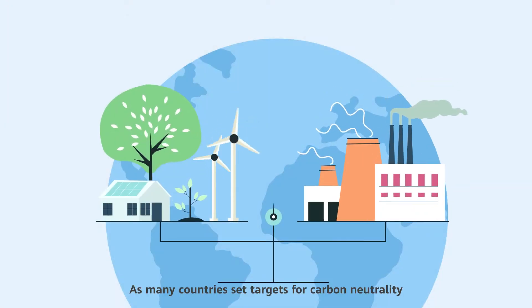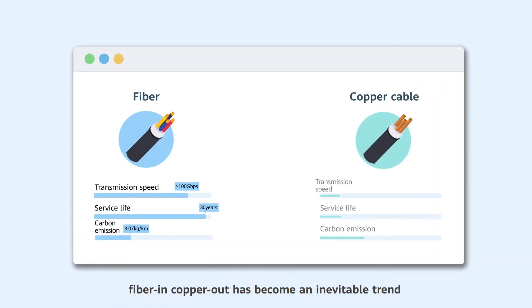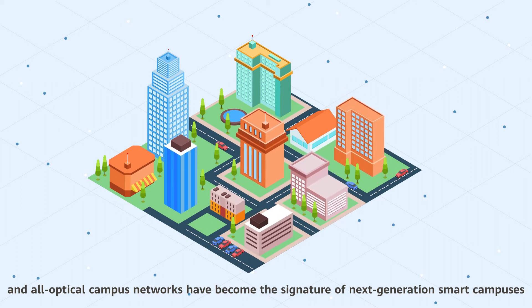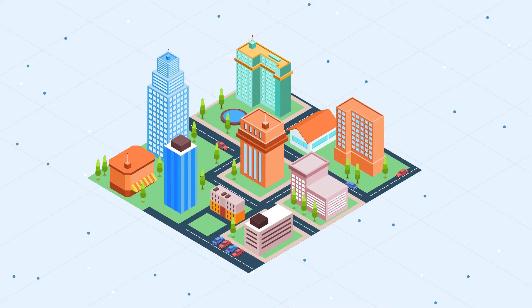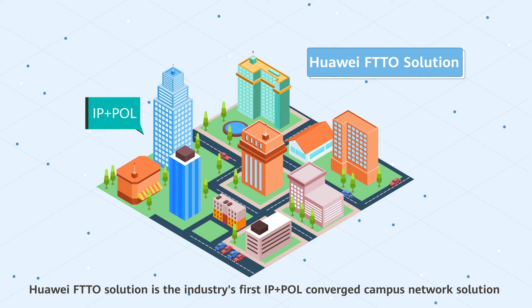As many countries set targets for carbon neutrality, fiber in-copper out has become an inevitable trend, and all-optical campus networks have become the signature of next-generation smart campuses. The Huawei FTTO solution is the industry's first IP plus POL converged campus network solution.